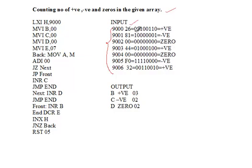In an 8-bit number, if the most significant bit (MSB) is 0, the number is positive. For 26, the MSB is 0, so it is positive. For 81, written as 10000001 in binary, the MSB is 1, so 81 is a negative number. For 00, all eight bits are zero, so it is zero. For 44, written as 01000010, the MSB is 0, so 44 is positive.